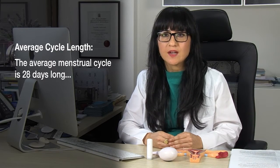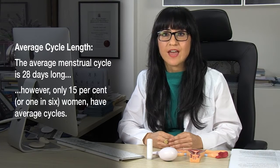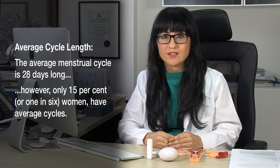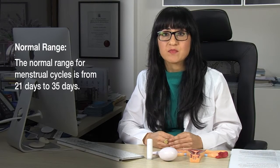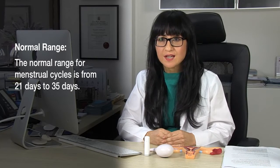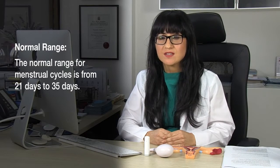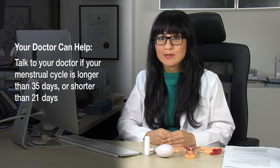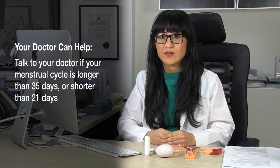Now, typically only about 15% of women have an average 28-day cycle. Many women can have a 21-day cycle or up to a 35-day cycle. If your cycle is shorter than 21 days or longer than 35 days, you should probably be speaking to your doctor. However, if you have a cycle that's anywhere between that range, this is generally what happens during that cycle.